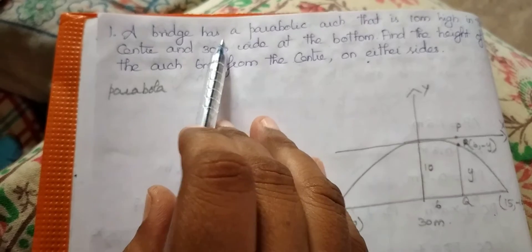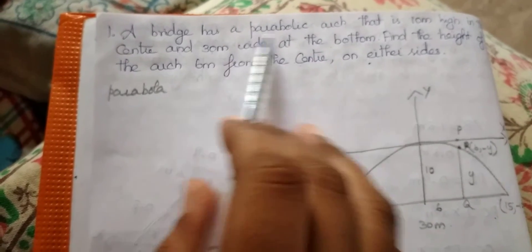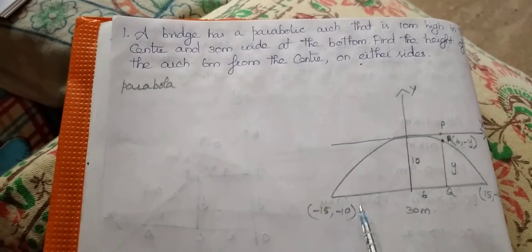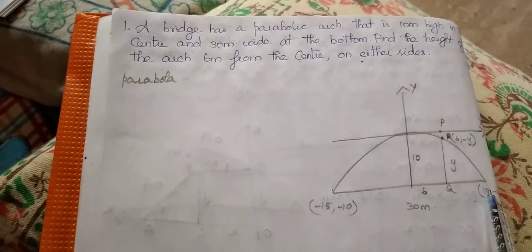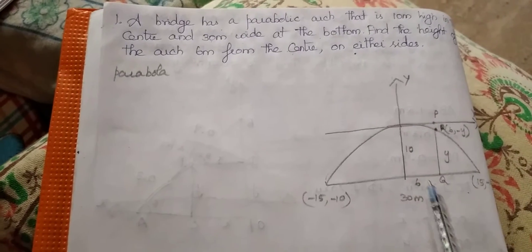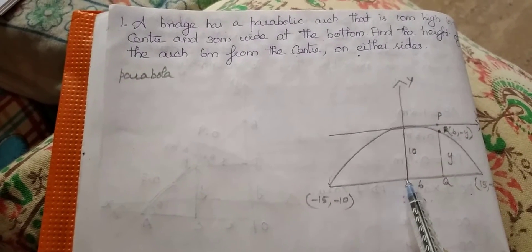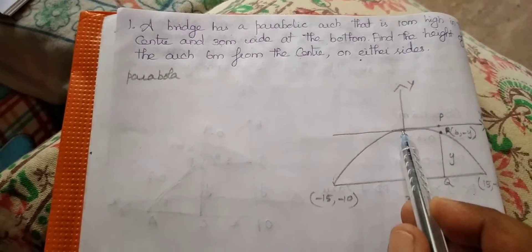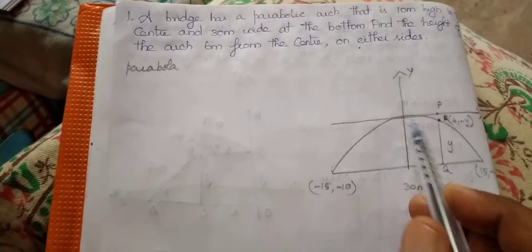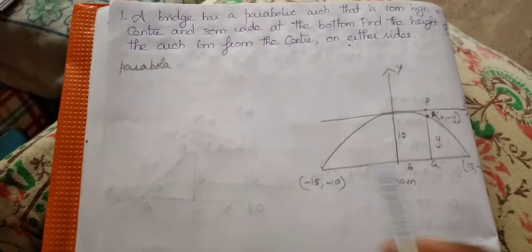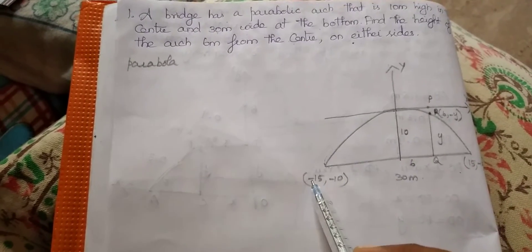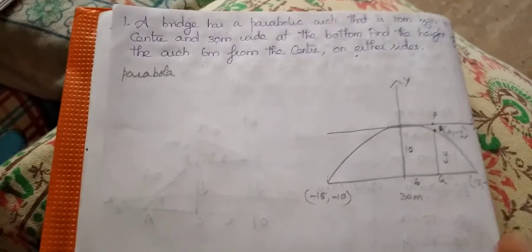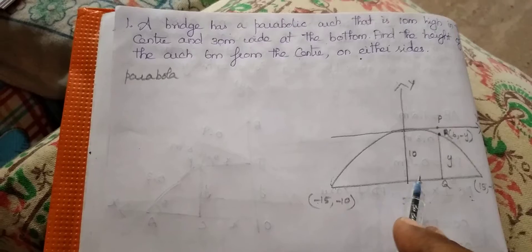What is given in this question? It is a parabolic arch in a bridge, so it opens downward. It is 10 meters high in the center and 30 meters wide. We have to split it for the parabola: minus 15 and plus 15 at the bottom.